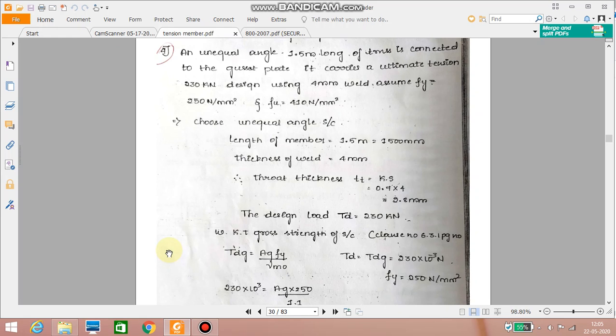We continue with the problems of tension member. The next problem with welding we will take. An unequal angle 1.5 meter long of truss is connected to the gusset plate. It carries an ultimate tension of 230 kilonewton.